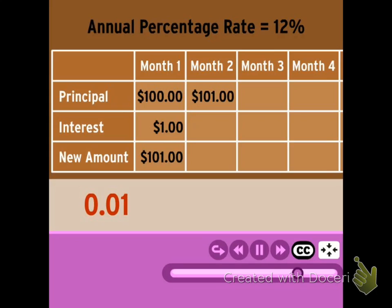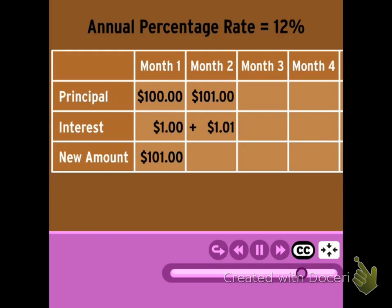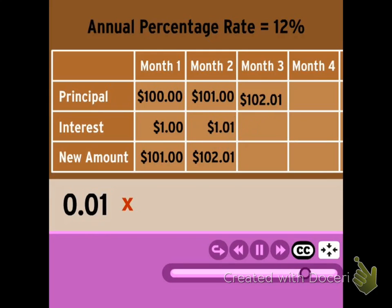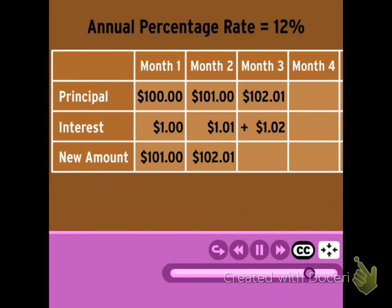0.01 times $101 is $1.01. Add that to the principal, and you get $102.01. For the next month, you take 1% of that $102.01 to get another $1.02 in interest. Add it on to the $102.01, and by next month my principal is $103.03.